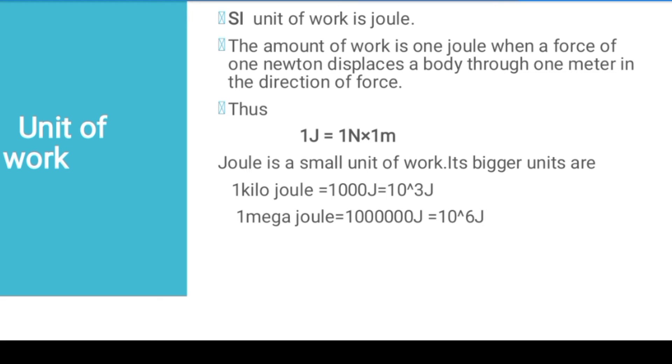The unit of work is joule. As we know, force unit is newton and displacement unit is meter. So what is 1 joule? If we use one newton force to move an object one meter, then the work is 1 joule. There are bigger units like kilojoule which is 10 power 3, or 1000 joules, and mega means 10 power 6 joules.